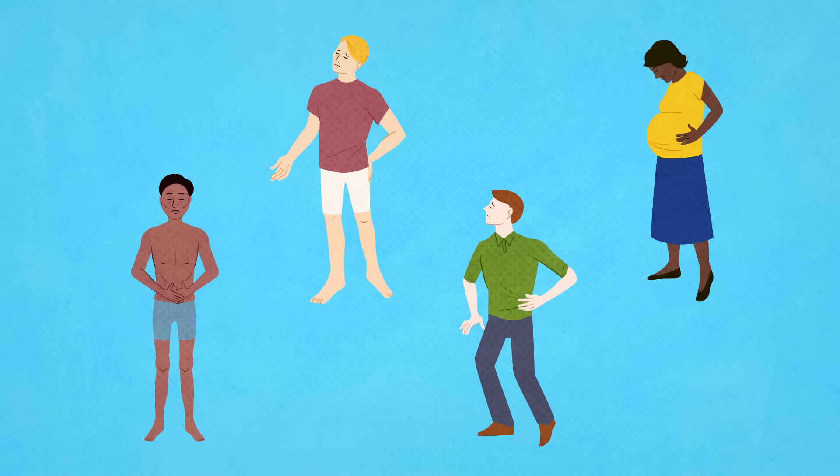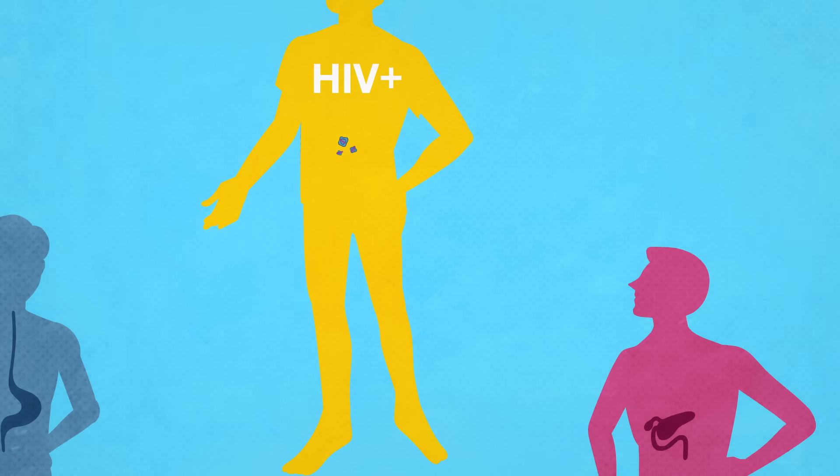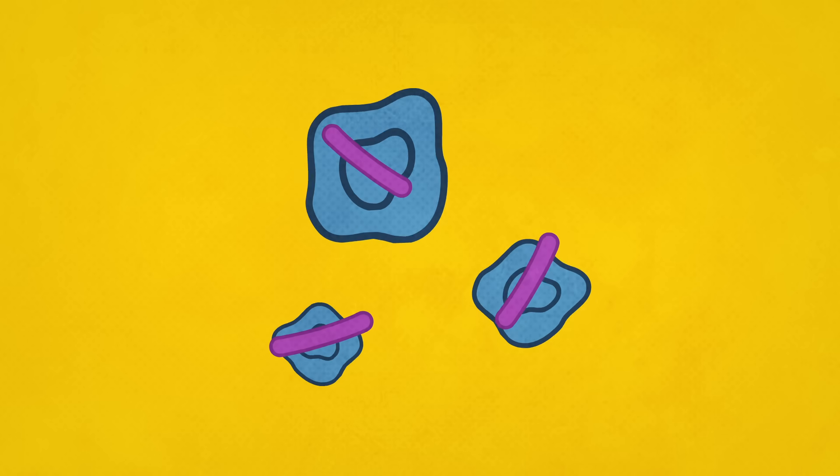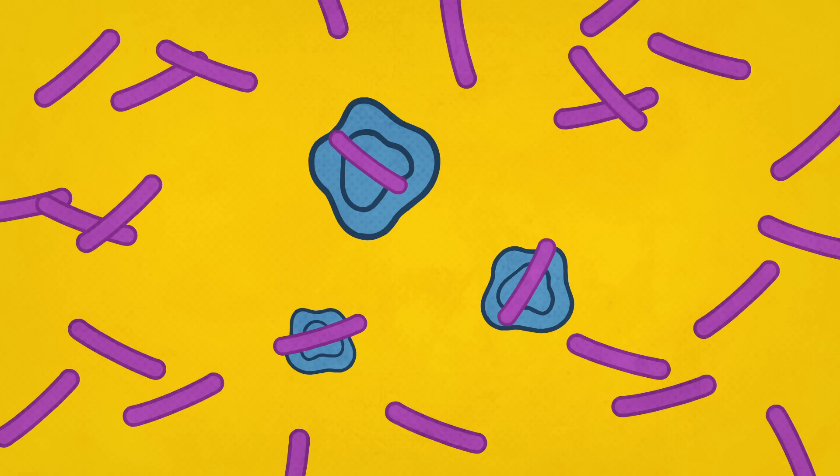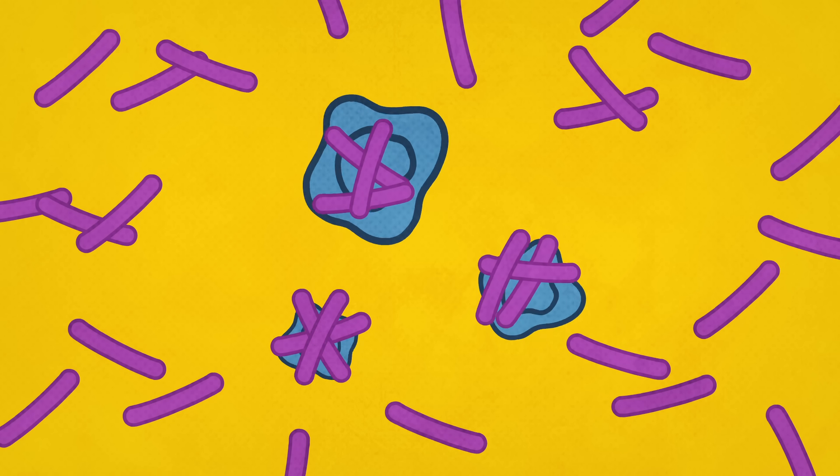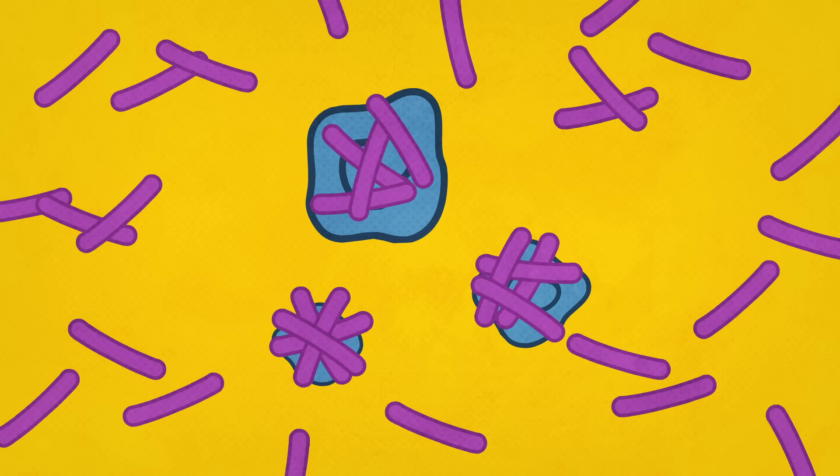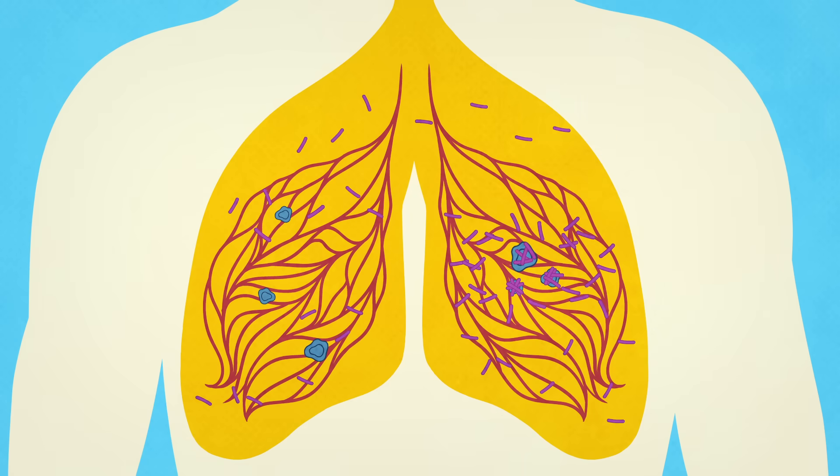But in individuals with other medical conditions, ranging from malnutrition and HIV to diabetes and pregnancy, the immune response may not be strong enough to destroy the intruder. If so, Mycobacterium tuberculosis will reproduce inside those macrophages and form colonies in the surrounding lung tissue.